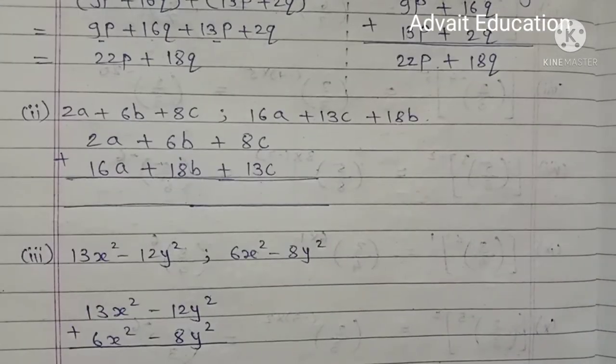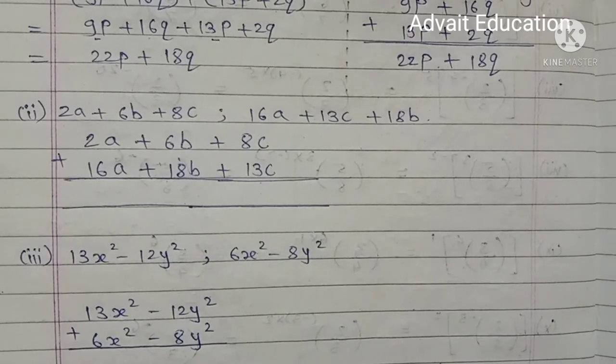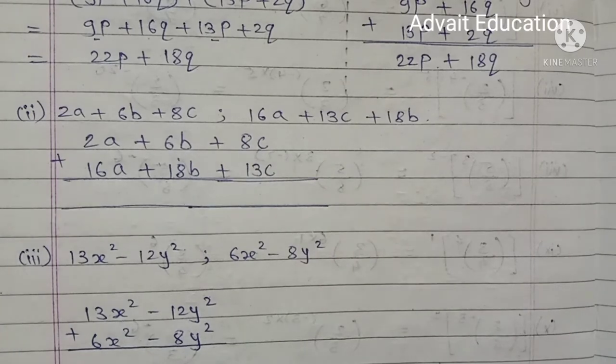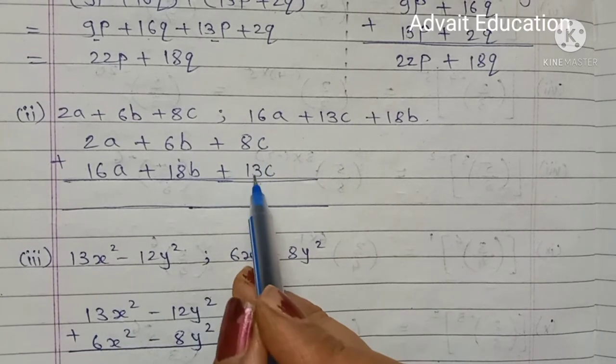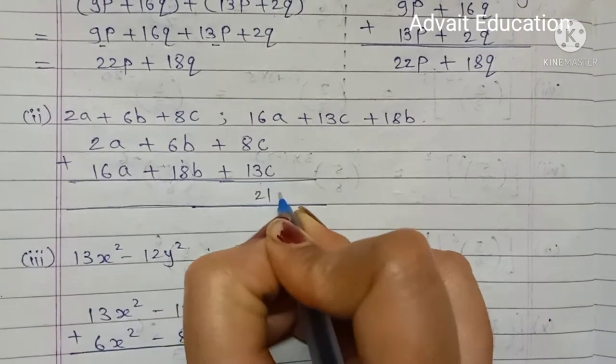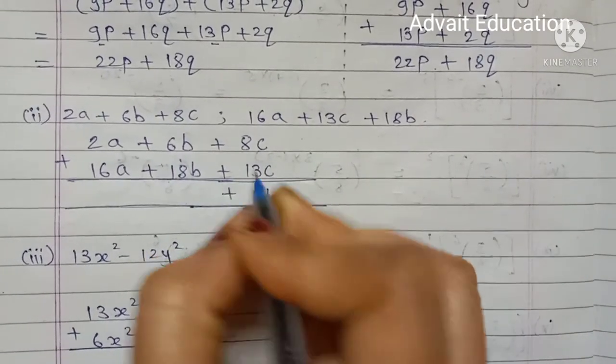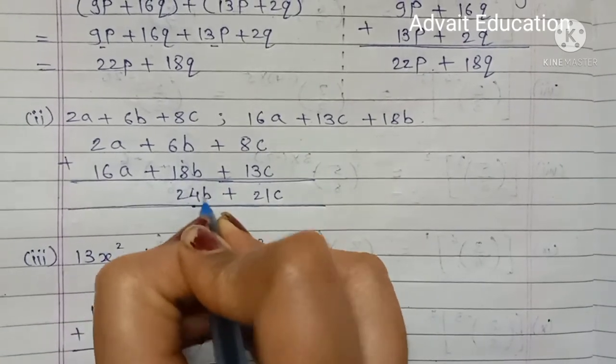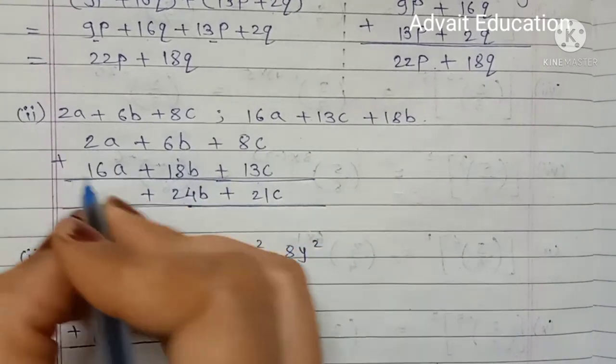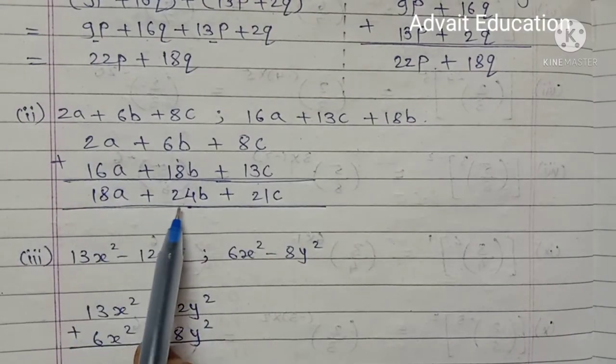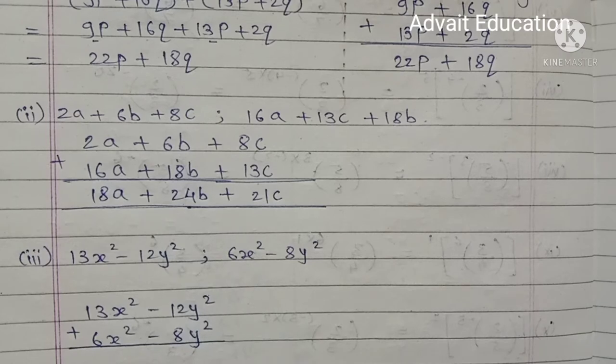Second problem: 2a plus 6b plus 8c, and 16a plus 13c plus 18b. 13c plus 8c equals 21c, plus 18b plus 6b equals 24b, plus 16a plus 2a equals 18a. Your answer is 18a plus 24b plus 21c.